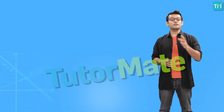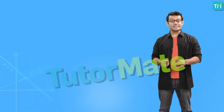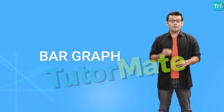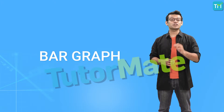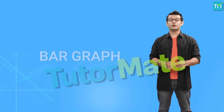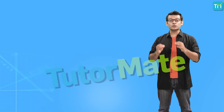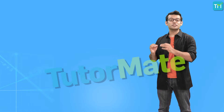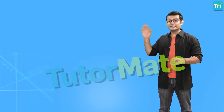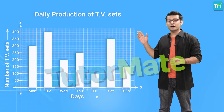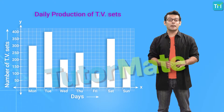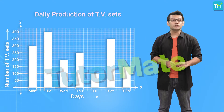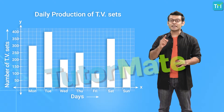Our first way of representation is the bar graph, also called a bar chart. It is a graphical display of data using bars of different lengths. Here is a bar graph showing the daily production of TV sets by the production unit of a TV company.